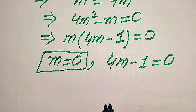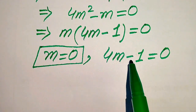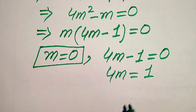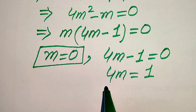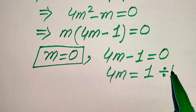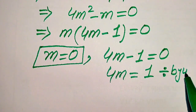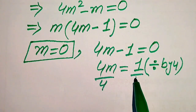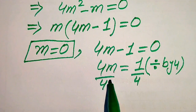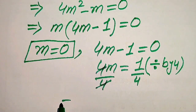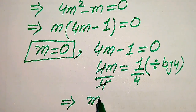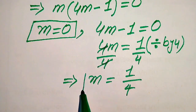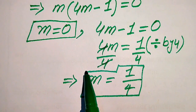This gives us our first root of the equation. To find the second root, we move minus 1 to the right hand side, giving us 4m equals 1. We then divide both sides by 4, so 4m divided by 4 equals 1 over 4. The 4s cancel and we get m equals 1 divided by 4. This is the second root of the given equation.